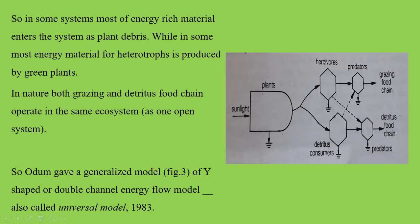Odom gave a generalized model called the Y-shaped or double channel energy flow model. Remember, this is also known as the universal model of energy flow. As per the single channel model there was just one grazing food chain and energy flowed through that single channel. But actually, our ecosystems are not closed — they are open, so energy and mass transfer keeps happening.